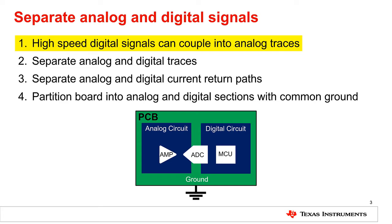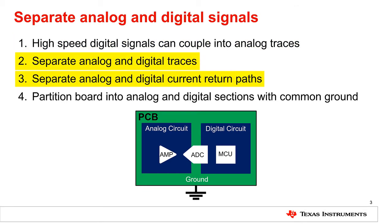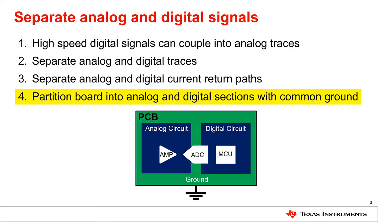This is true not only for analog signals, but also for power traces and planes. Consequently, it is important to keep the signal traces, power traces, and current return paths of analog and digital circuits separate whenever possible. Keeping the traces separate can be straightforward, but ensuring the current return paths do not cross can be more challenging. For this reason, the easiest solution is typically to partition the board into analog and digital sections, which ensures the analog circuitry is kept apart from the digital circuitry.